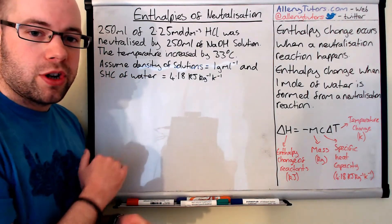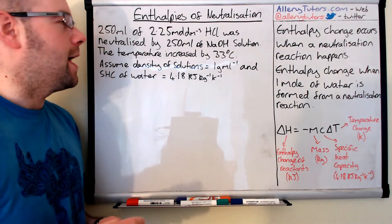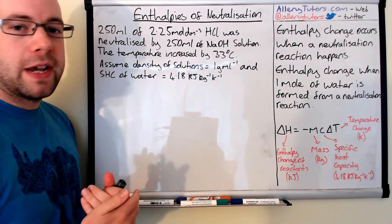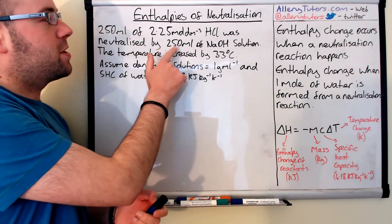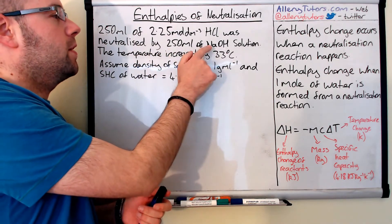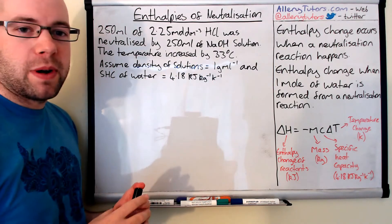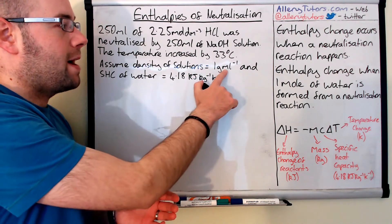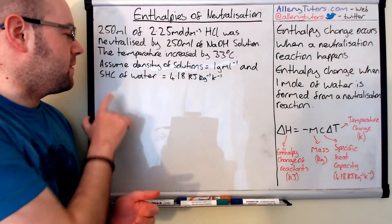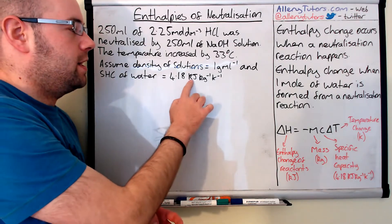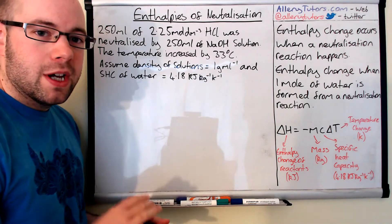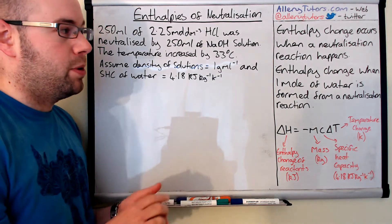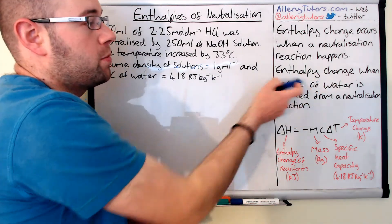We're going to go through an example to show you exactly how to work this out. We've got 250 mL of 2.25 mol per dm³ of HCl — so a pretty strong acid — and this was neutralised by 250 mL of sodium hydroxide solution. The temperature increased by 33 degrees Celsius. We're going to assume the density of the solutions is 1 g/mL and the specific heat capacity of water is 4.18 kJ per kg per Kelvin. The first thing we're going to do is write out our equation, because the equation is really important, especially as we've got the one mole of water being formed.